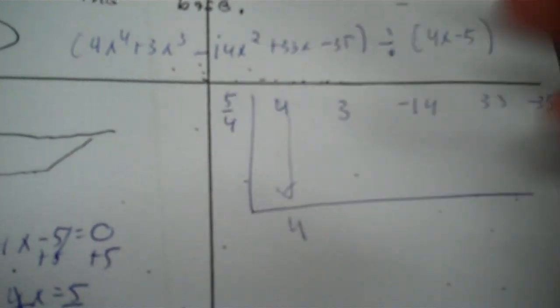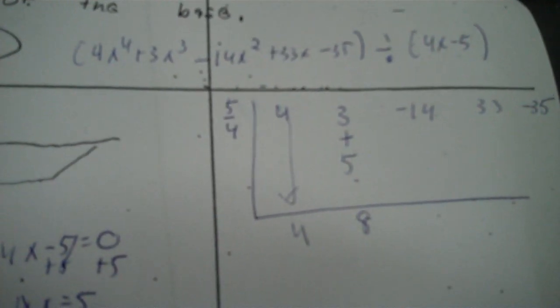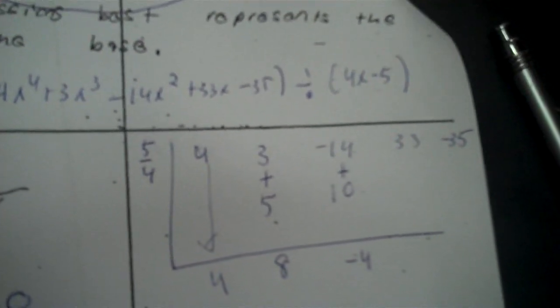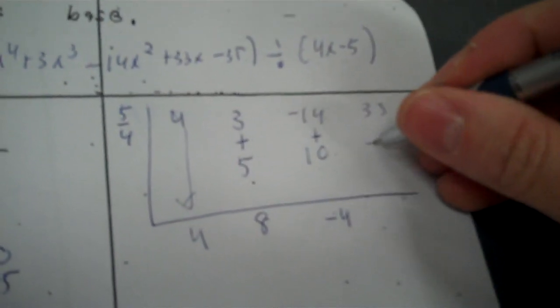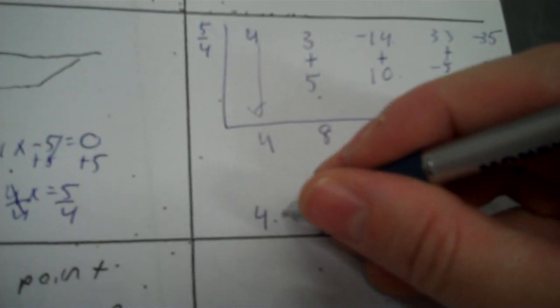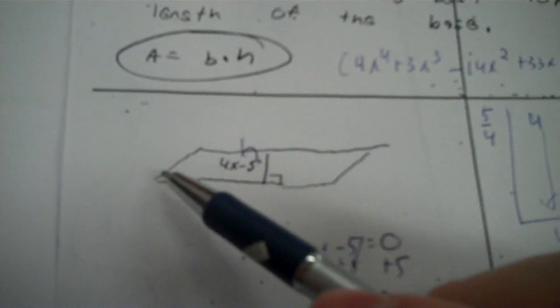Drop your 4. 4 times 5/4 is 5. That's 8. 8 times 5/4 is 10. Negative 4. 5/4 times negative 4 is negative 5. Then I add those — I get 28. And 5/4 times 28 is 35, and that's zero. Now I have my answer — I have 4, but instead of being 4X to the fourth, it's 4X to the third. Everything else follows down. There we have it — that represents the length of the base.